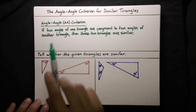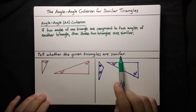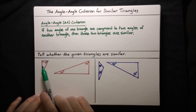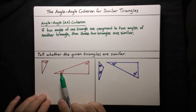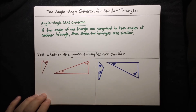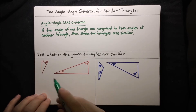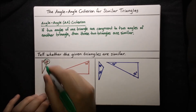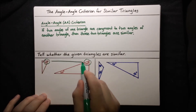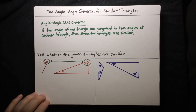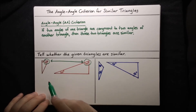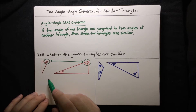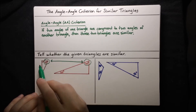So now we want to use the angle-angle criterion to tell whether the given triangles are similar. First, we've got a right triangle with a 70-degree angle labeled, and then we've also got a triangle with angles 20 degrees and 70 degrees labeled. Right off the bat, we notice that we have one pair of congruent angles: this 70-degree angle and that 70-degree angle. Are there any other pairs of congruent angles? It doesn't look like we have any labeled, but we do have some unlabeled angles — maybe one of those will lead to a congruent pair.